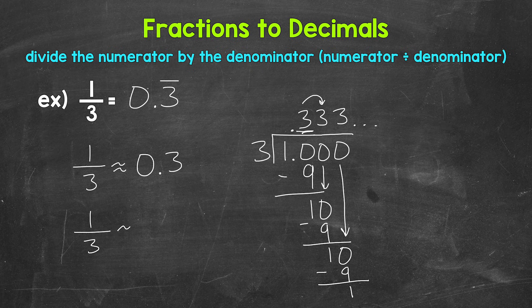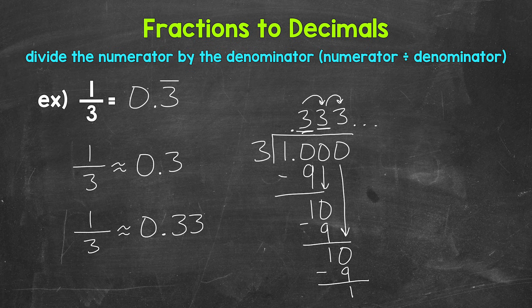Now let's do the hundredths place. So 1 third is approximately — well, we have a 3 in the hundredths with a 3 in the thousandths, so this rounds to 33 hundredths. So some different options there as far as writing out a repeating decimal: we can use a bar above a repeating digit or digits to show that they repeat, or we can round.